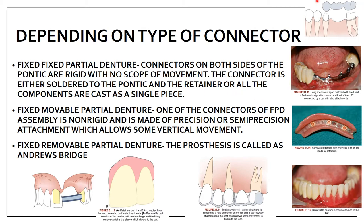This is a fixed-fixed, cast as a single piece. The next is fixed-movable partial denture. In this, one of the connectors of the FPD assembly is non-rigid — it allows some movement between the pontic and the abutment. It is made of a precision or semi-precision attachment which allows some vertical movement. So one side would be fixed and one side would be movable.